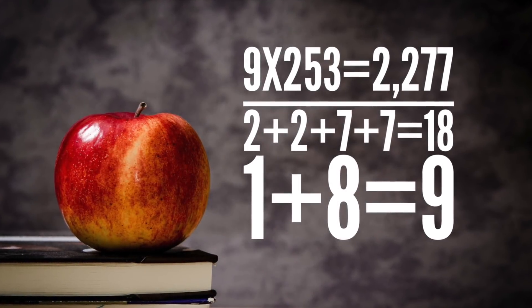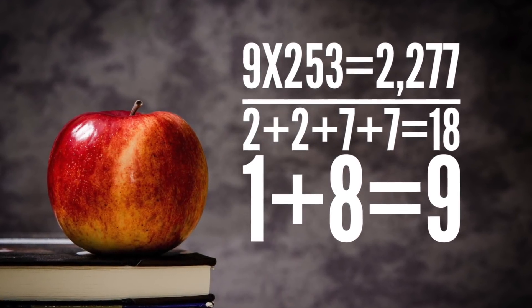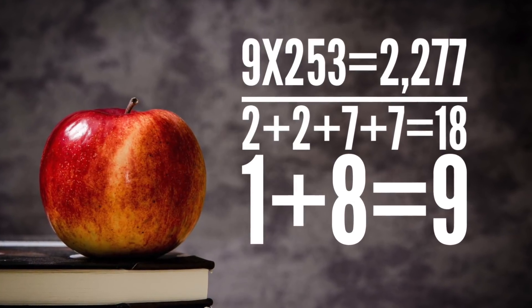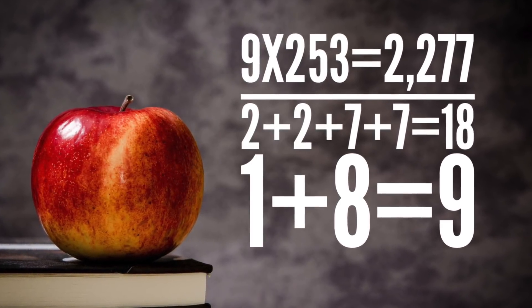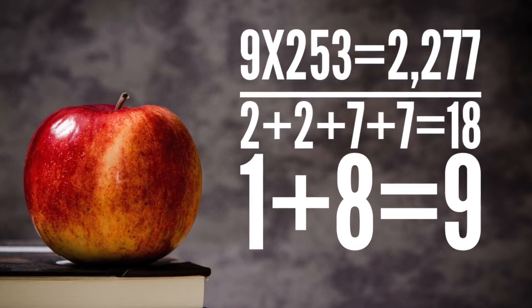Okay, let's get a little more difficult. 9 times 253 comes to 2,277. 2 plus 2 plus 7 plus 7 equals 18, and 1 and 8 equals 9.